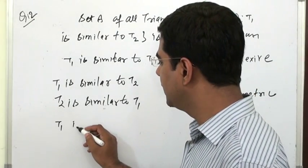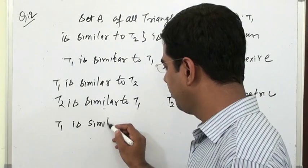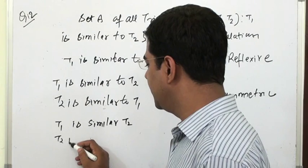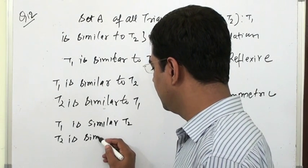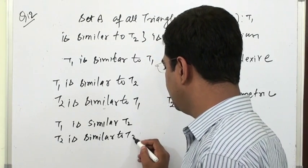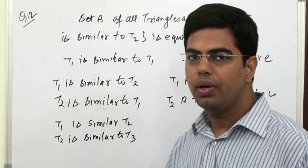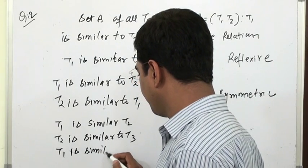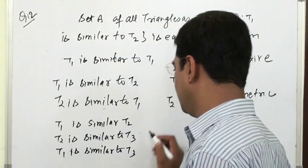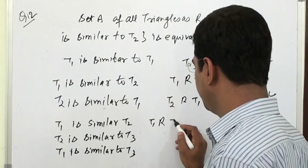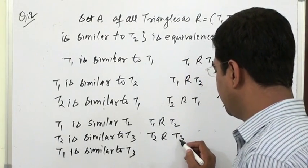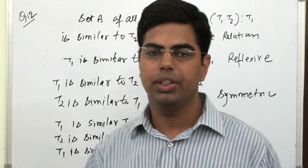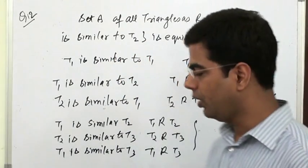Third, Transitive: if T1 is similar to T2 and T2 is similar to T3, तो T1 is similar to T3 होगा. So T1 related to T2 and T2 related to T3 implies T1 related to T3 — यह condition जब होती है तो relation Transitive होता है.